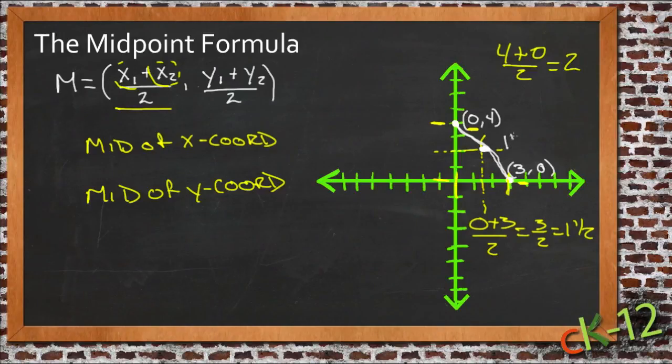All it is is the average of the x values and the average of the y values. There's nothing more complicated than that to it. It just looks creepy because we have all these letters in there.